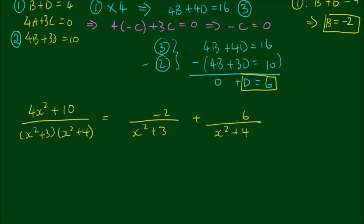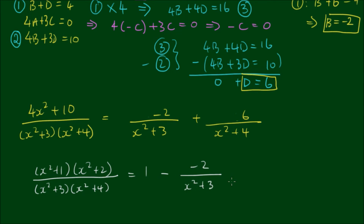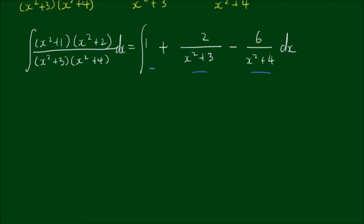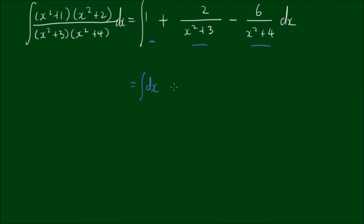Rewriting the entire integrand and expanding the negative into the brackets, we have simplified the integrand to a form we can now integrate. Integrating both sides, on the right-hand side we have three separate entities that we can integrate separately, bringing the coefficients out front.